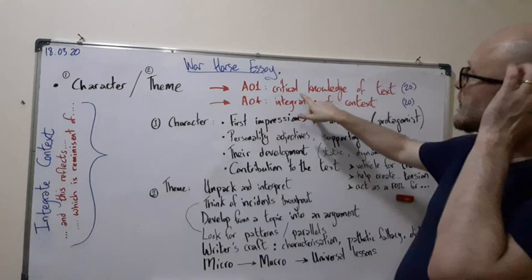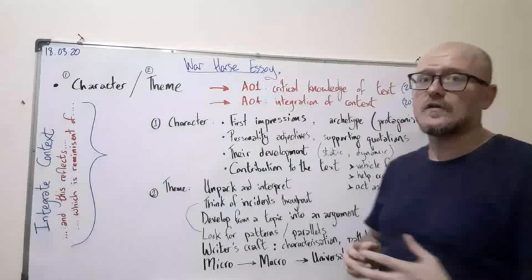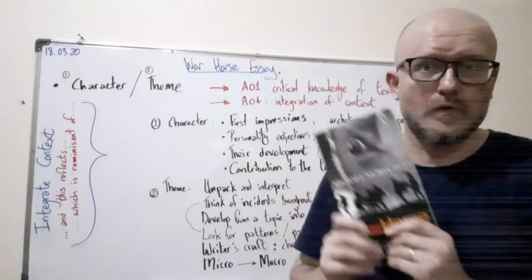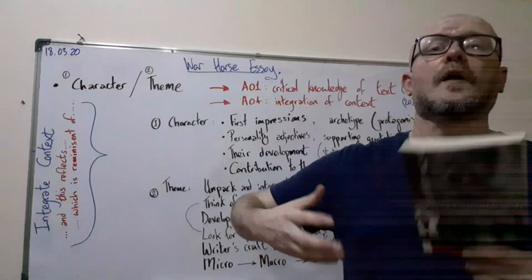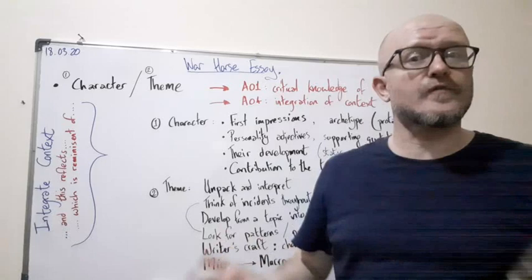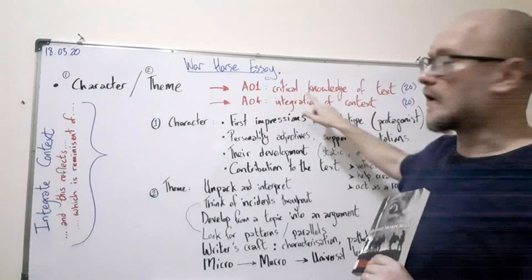Here are the assessment objectives. A01: you need to have critical knowledge of the text. That's 20 marks. Critical knowledge means that you have to know the book throughout, not just up to chapter 4 or something like that. You have to know the whole span of the book. As well as that, you need to be aware of writers craft, you know, the whole Peter stuff where you foreground. This is done through the writer's use of figurative language or characterization, whatever it happens to be.